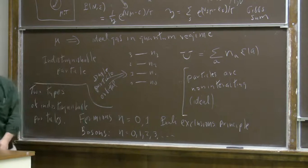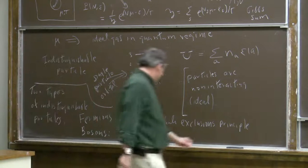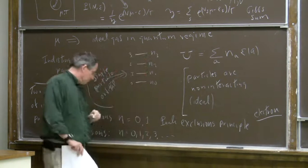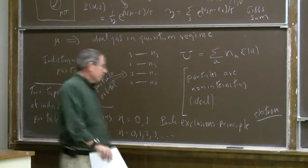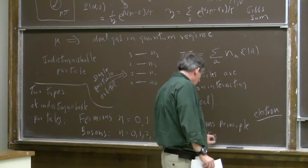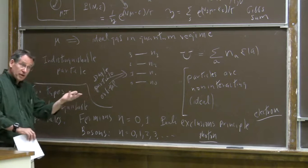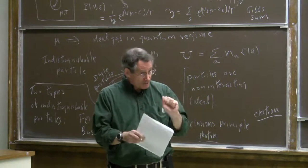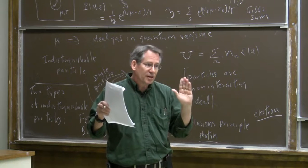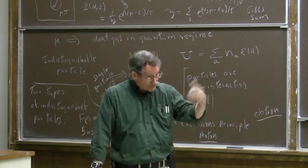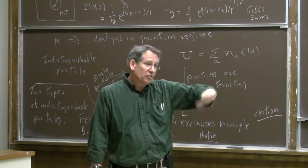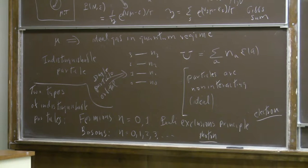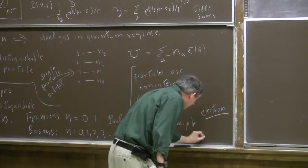An electron is a fermion; a photon is a boson. When I speak of an orbital, I mean completely characterizing all quantum numbers of the state—so spin up and spin down would be two different orbitals. Another example of a boson is a helium atom, specifically helium-4. For photons there is no conserved photon number, but for cases like a helium gas we have a fixed number of particles, and then we can speak of a chemical potential which controls the number of particles.